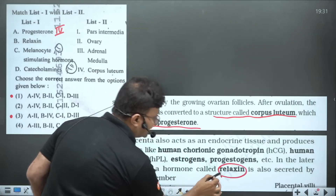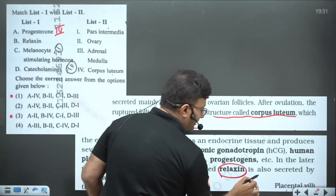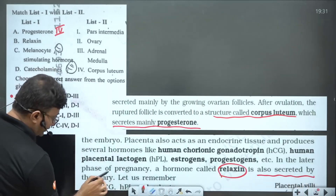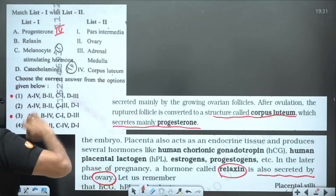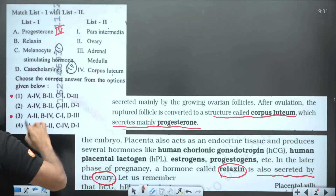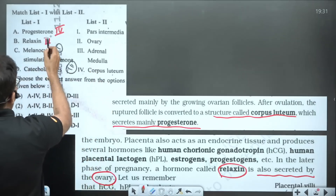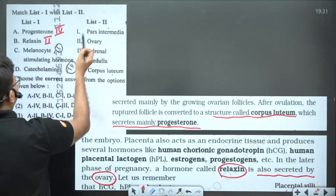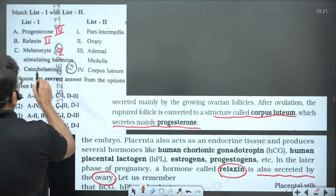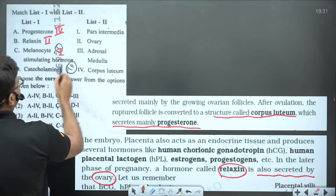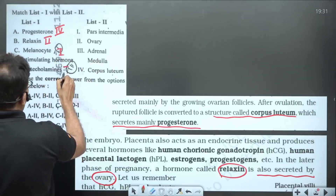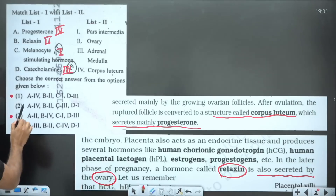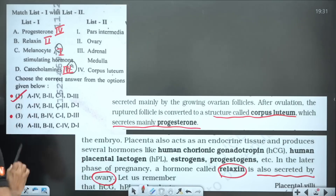Now for relaxin — relaxin is released from the placenta, but it is also clearly secreted by the ovary. Since placenta is not an option but ovary is, you will put ovary there. For melanocyte-stimulating hormone, the answer is pars intermedia, and for catecholamines, the answer is adrenal medulla.